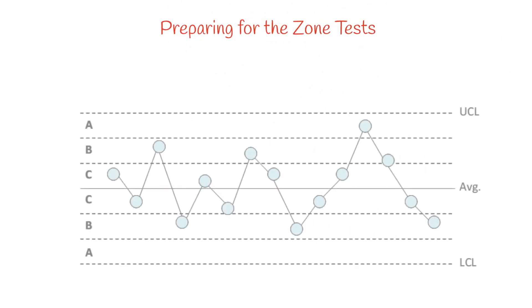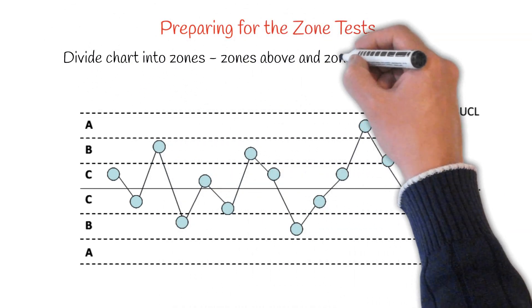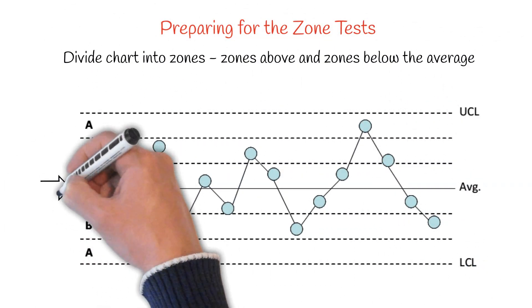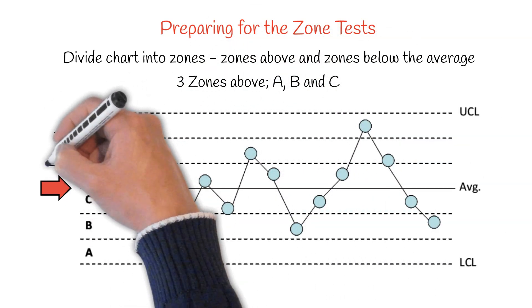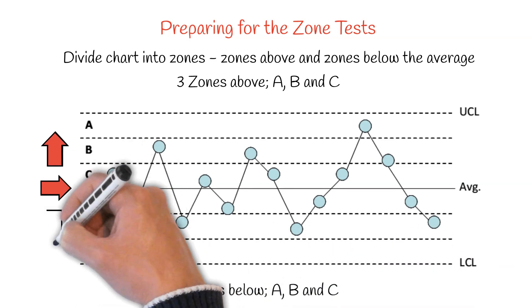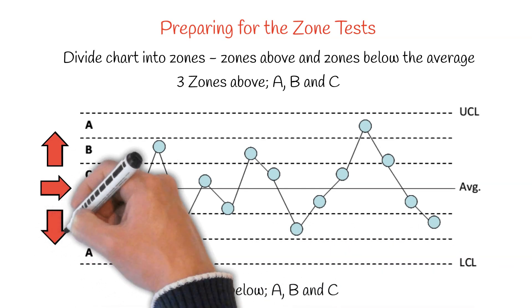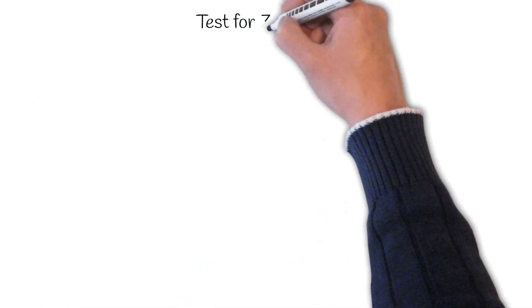The next tests are the zone tests. You have to prepare the chart for that by dividing the chart into zones. There are zones above and zones below the average. The three zones above are called A, B, and C. The three zones below are A, B, and C. C is closest to the average. A is closest to the control limits. And we have tests for each of those zones.